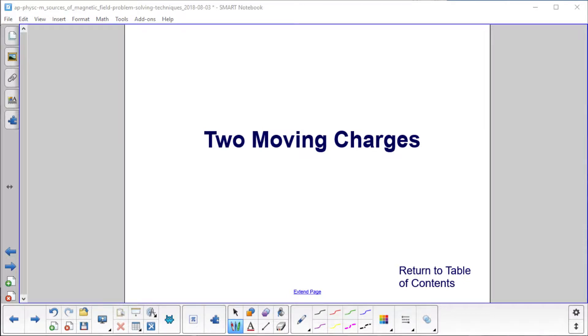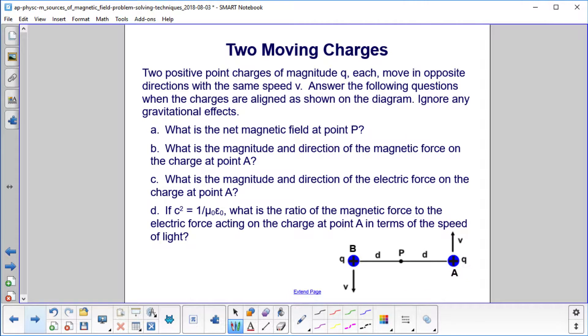Two moving charges. We have two positive point charges of magnitude Q, and they're down here. Here's one, here's the other. One's moving up, one's moving down, both have the same speed V.